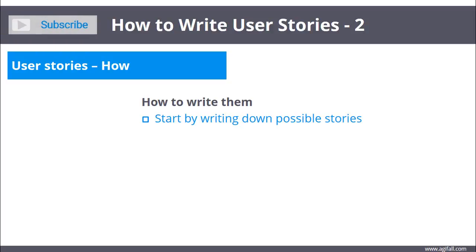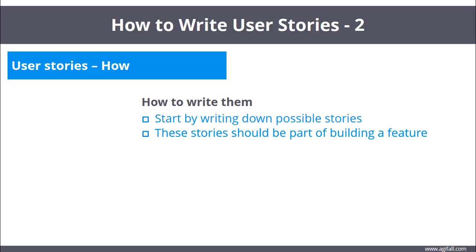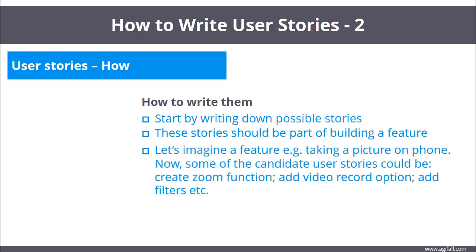Let's see how to write user stories. Start by writing down possible stories, otherwise known as candidate stories. We write these stories because we believe they will be part of building a particular feature. Let's imagine a feature, for example, taking a picture on the phone. Some of the candidate user stories could be: create a zoom function, add a video record option, add filters, etc.